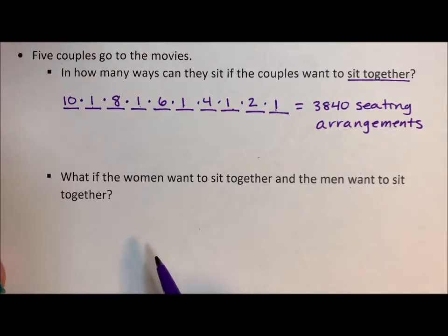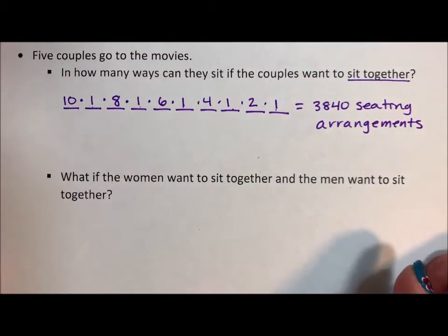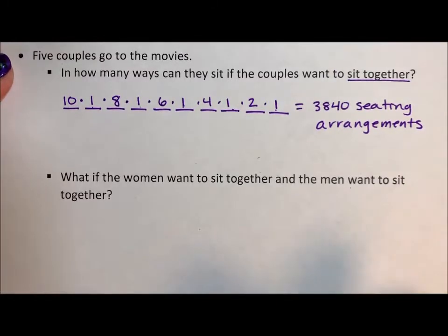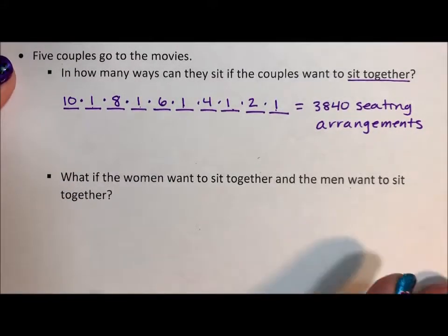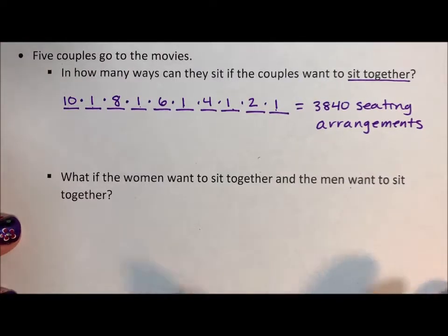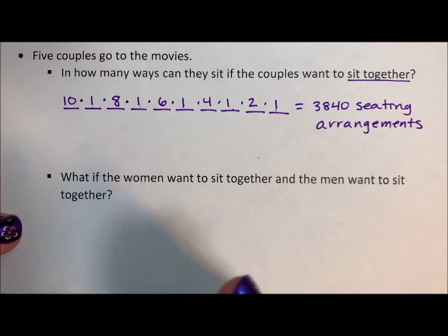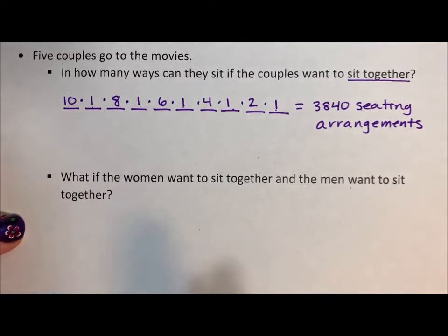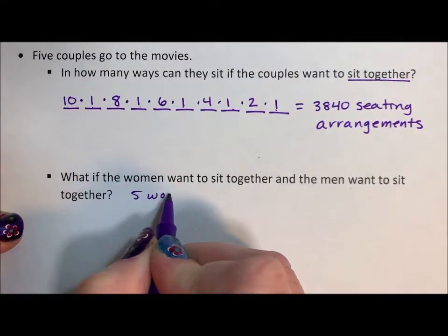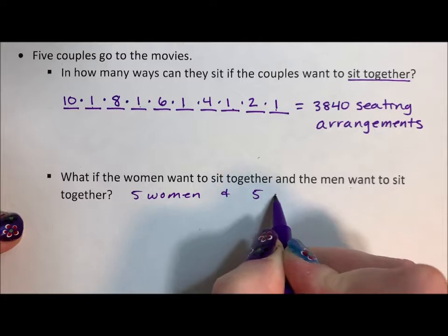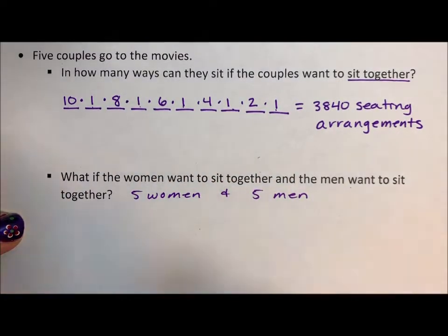What if instead of sitting by couples — and it doesn't have to be male-female couples — but just for the simplicity of this problem, what if the women want to sit together and the men want to sit together? We're just going to assume it's five and five. It could have been same-sex couples, but we're just doing a simple problem, so we're going to say five women and five men. That's just how I'm going to define it for the simplicity of the problem.